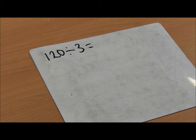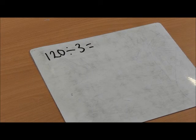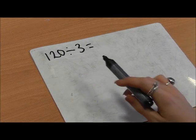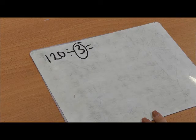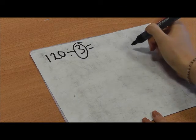Year 3 division using arrays. The calculation is 120 divided by 3. My divisor is 3, so I'm going to draw 3 arrays.